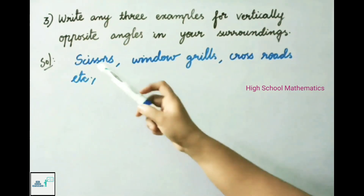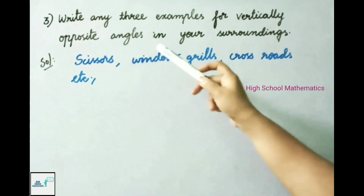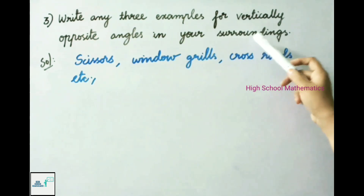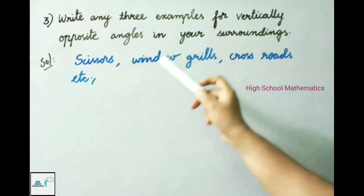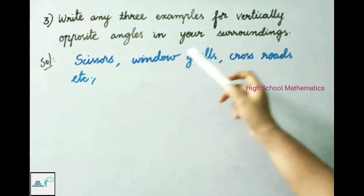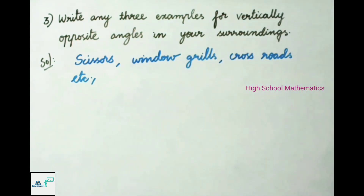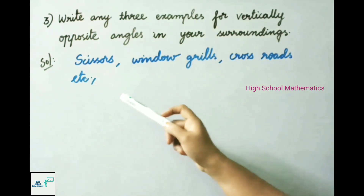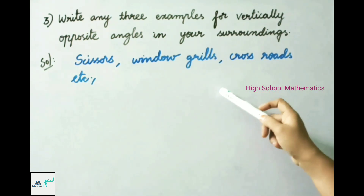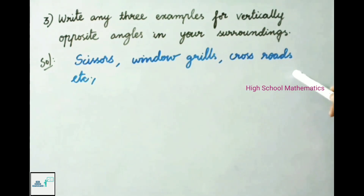Question number 3: Write any 3 examples of vertically opposite angles in your surroundings. The examples are scissors, window grills, and crossroads.